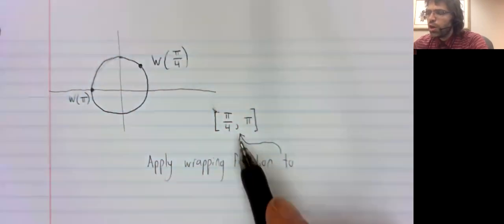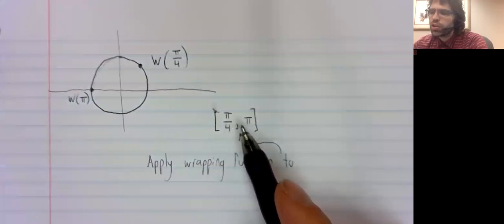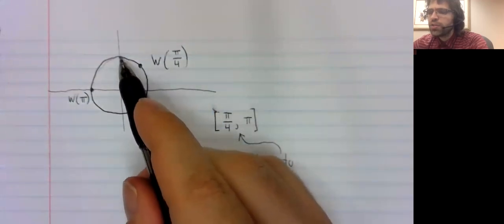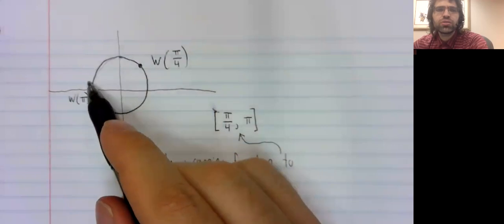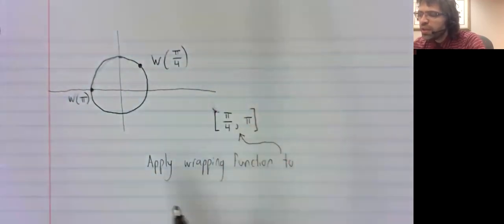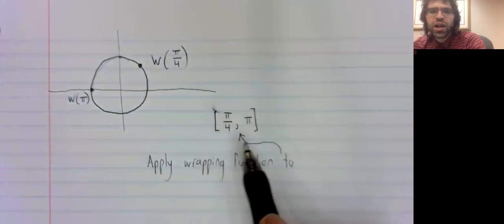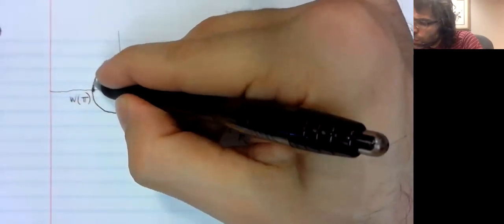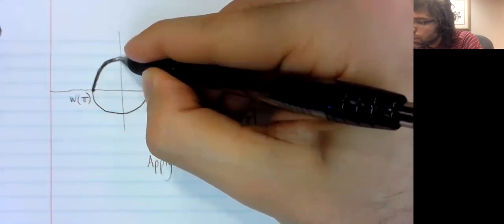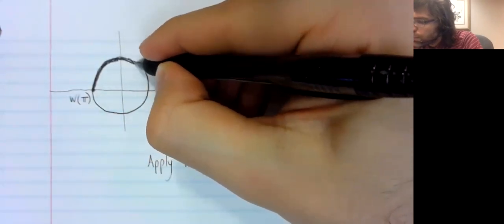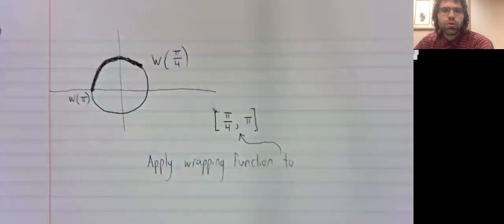Or the values between pi over four to pi take you to various points in this region. If we apply the wrapping function to this entire interval, we get an arc of the unit circle.